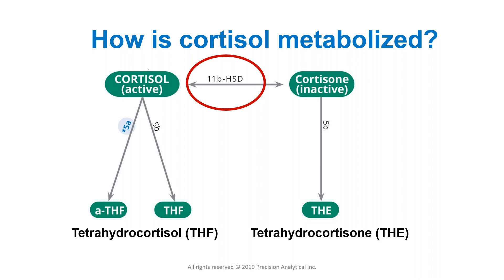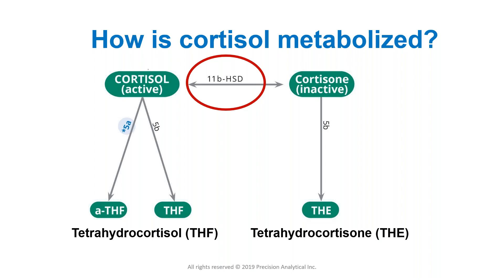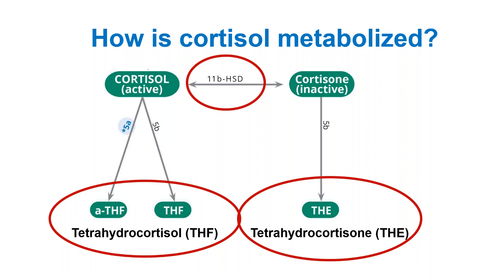Once you have cortisol or cortisone, they must be degraded. Cortisol degrades into tetrahydrocortisol (THF); cortisone degrades into tetrahydrocortisone (THE). In urine testing — whether dried urine like the Dutch Test or 24-hour urine — you look at THF and THE, and the balance between the two gives you an idea of the activity of 11-beta-HSD1 and 11-beta-HSD2, which is immensely helpful.